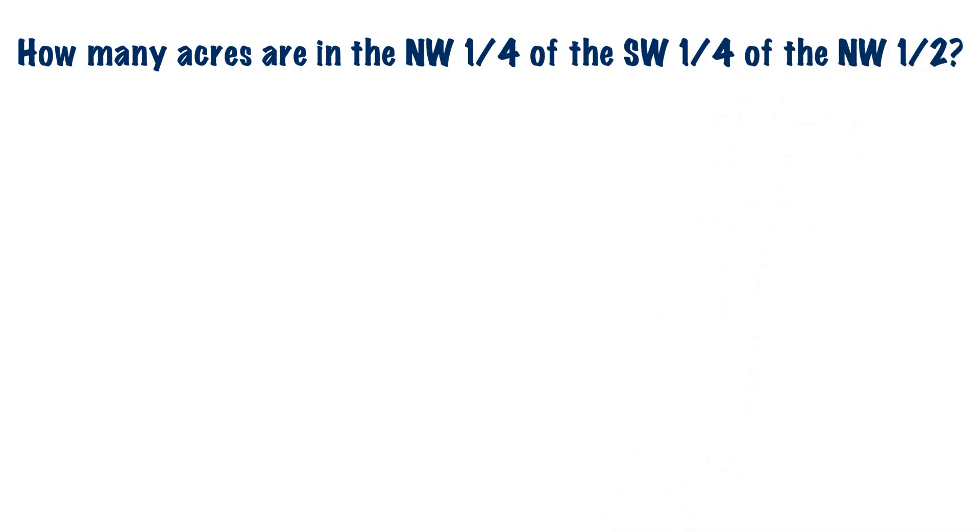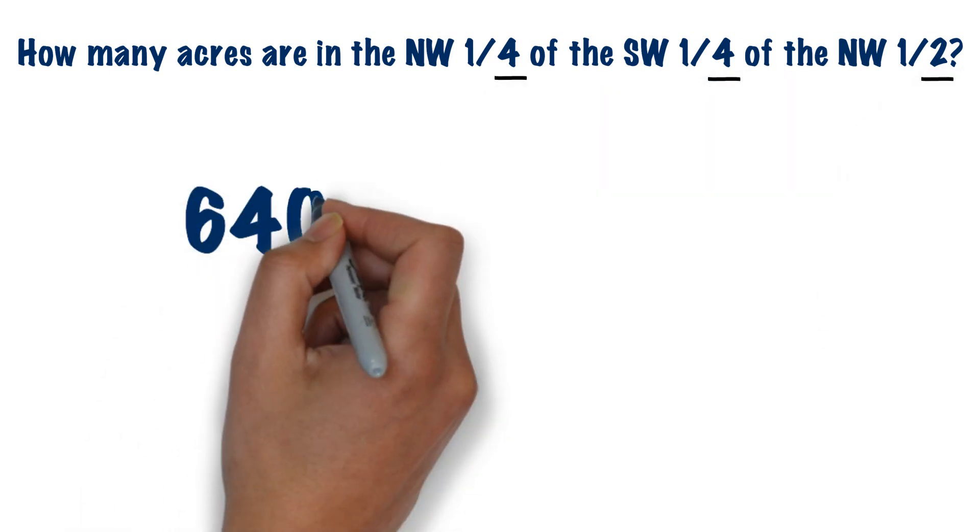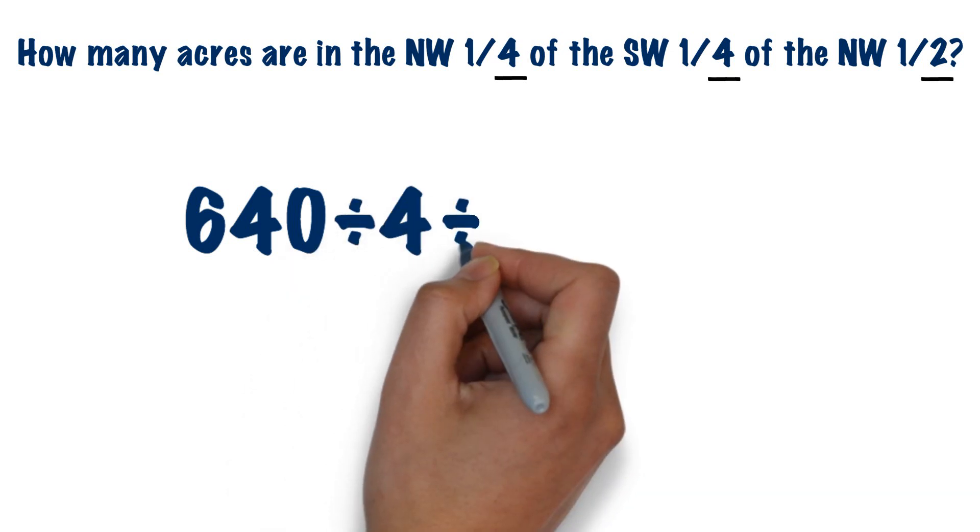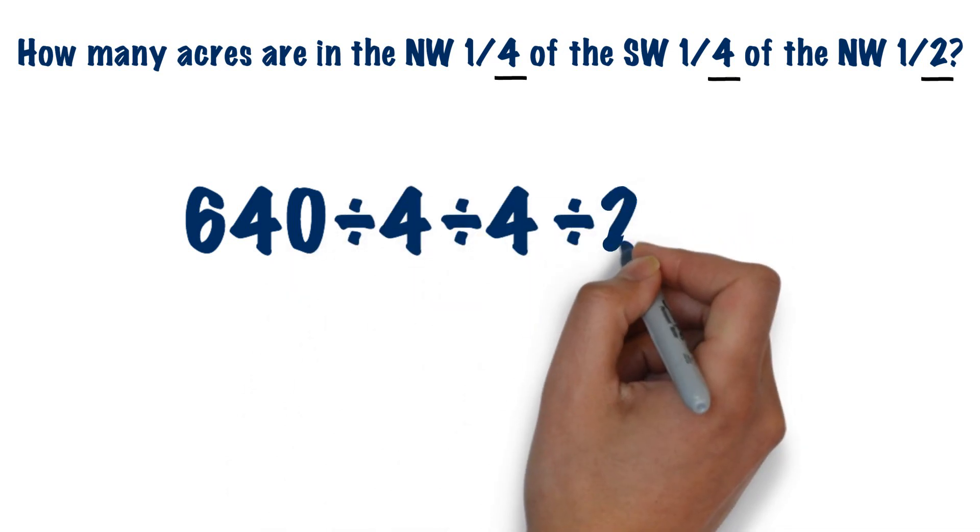The first thing you need to know is that you only use the bottom numbers of the fractions to calculate the number of acres in a section. The second thing you need to know is that there are 640 acres in a section. So enter 640 into our calculator. We hit the divide key, enter 4, divide, enter 4, divide, enter 2, and then press the equal sign.